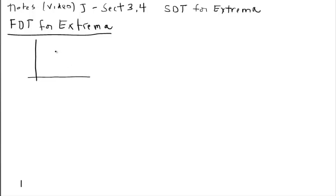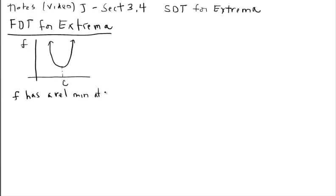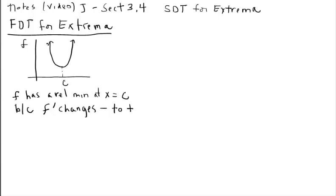Consider a parabola that opens upward — this is our regular graph F. The minimum occurs at the vertex, and we'll call the x-coordinate of that minimum C. So we can clearly see that this function has a relative minimum at x equals C. That's our critical number. The reason we have a relative min is because F prime, our slopes, change from negative to positive.